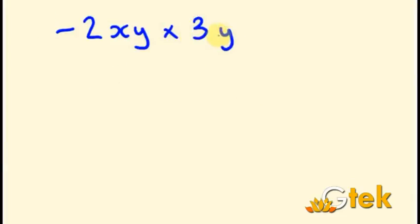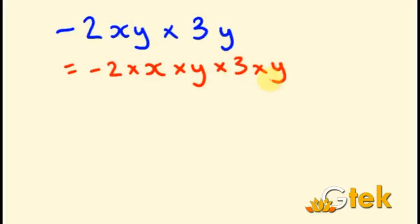Now: minus 2XY into 3Y. We can expand this as minus 2 times X times Y into 3 times Y. First, multiply the numbers: minus 2 into 3 gives minus 6. Then X remains, and Y appears twice — Y into Y is Y squared. So the answer is minus 6XY squared.